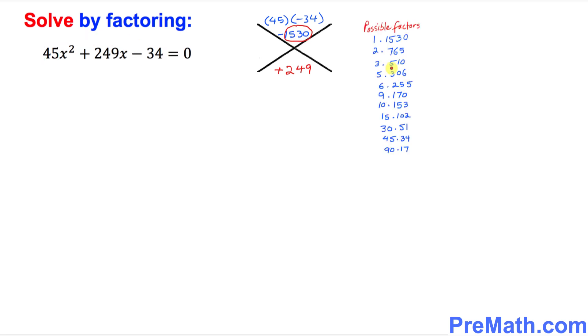And here I have listed all the possible factors of 1530. Now look at anyone that is feasible for us. You can see that 6 times 255 is going to work for us. Why? Because if you subtract them you're going to get positive 249. So I'm going to put down 6 right up here and 255 right up here.